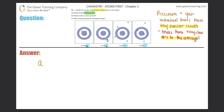Precision has nothing to do with getting the right answer or the answer you want — it just means are your results close together near the average. So which archer is most precise? It would be archer X, because all of his shots are in the same vicinity, very close together. That's what precision is all about — very similar results, very close to an average number.